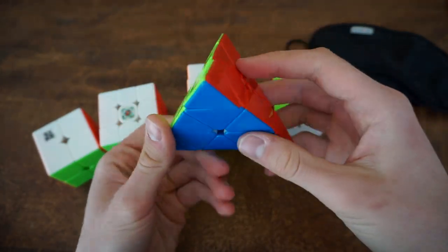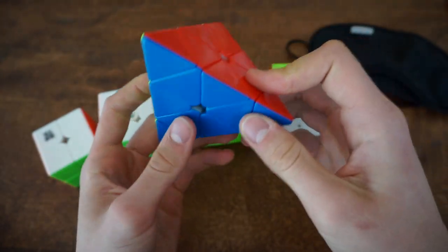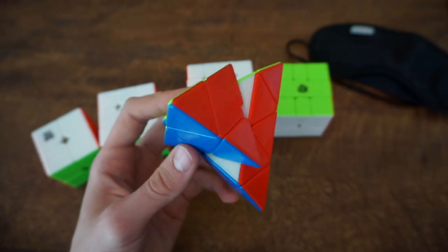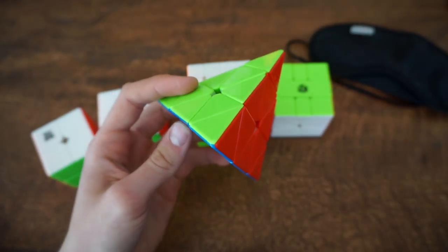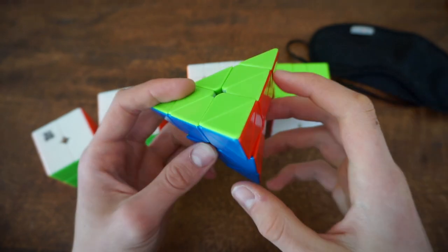This is Pyraminx if you didn't know, and my goal is to not get any DNFs. That is going to be hard but I'll try, and also podium. But nonetheless, time-wise my goal is to get let's say sub-5.5 average.